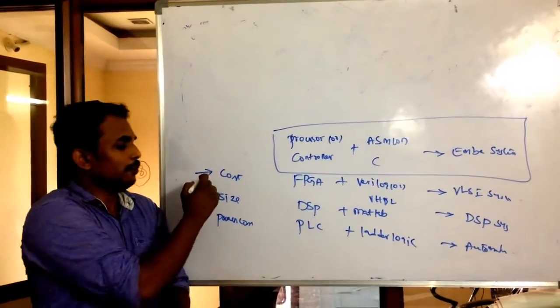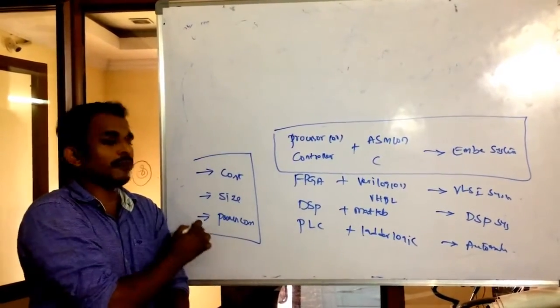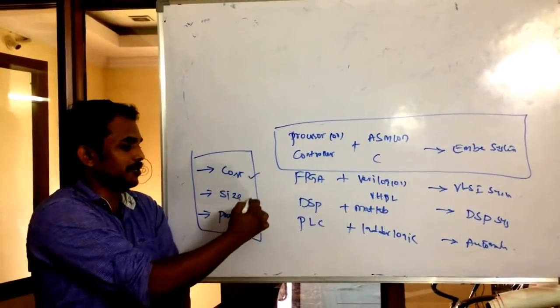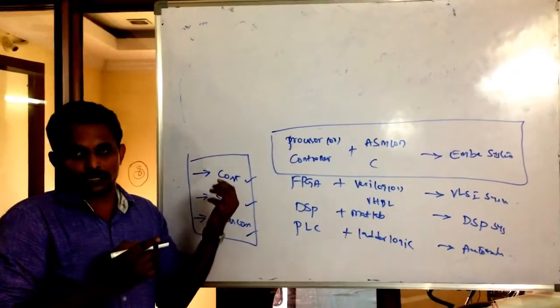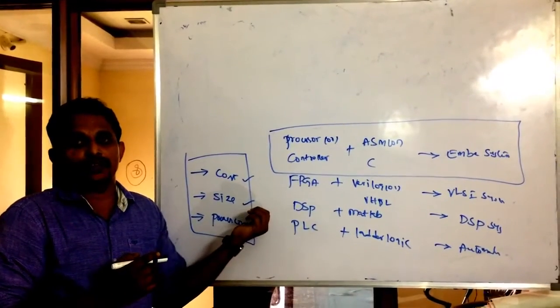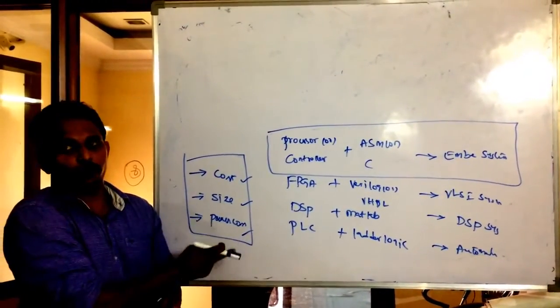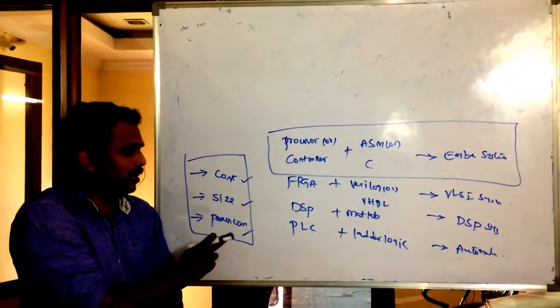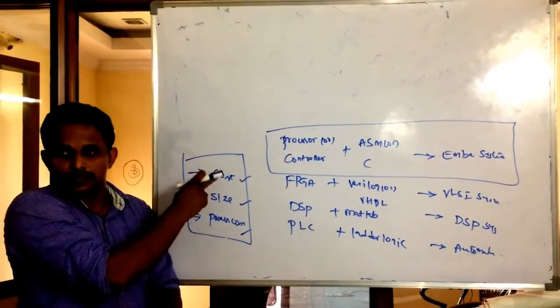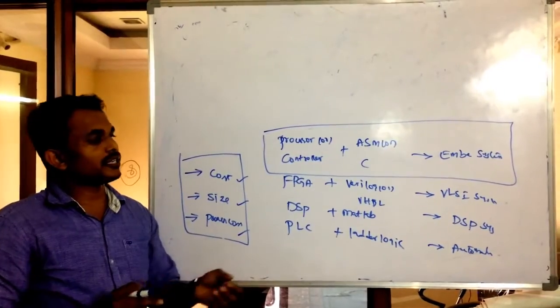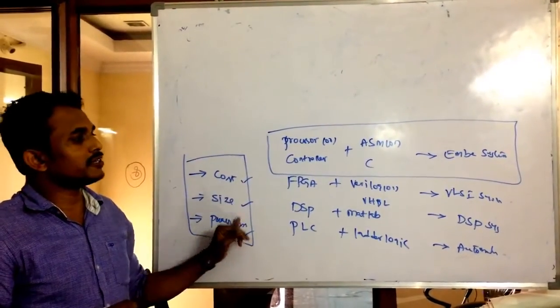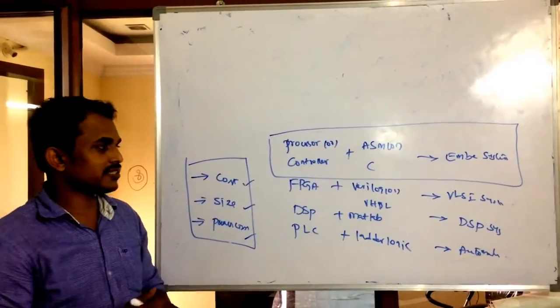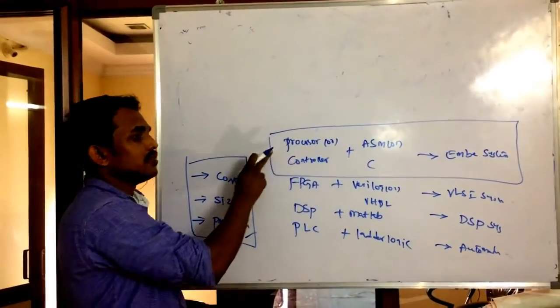If you take any application, they will make marketing based on these three parameters. Some applications advertise with low cost, some advertise with smartness, and some advertise based on power backup. These are very important parameters in electronics.